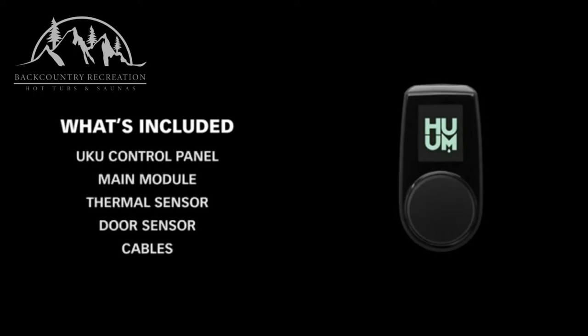Your Uku should include the wall-mounted controller, the main module, the temperature sensor, two cables for the temperature sensor and door switch, and one slightly longer cable for the wall-mounted controller.